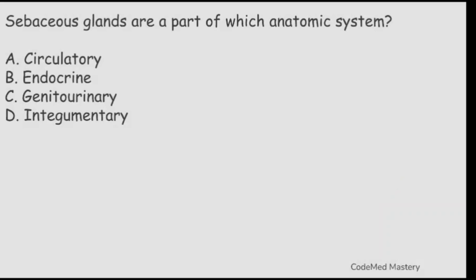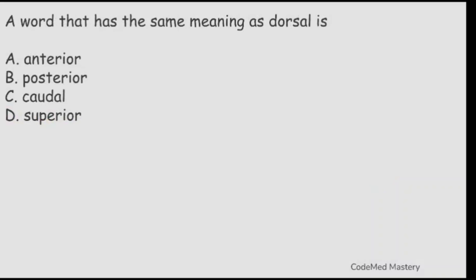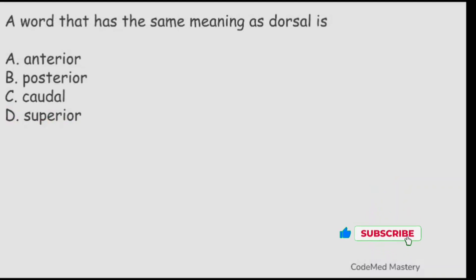Next question: sebaceous glands are a part of which anatomic system? Option A: circulatory. Option B: endocrine. Option C: genitourinary. Option D: integumentary. The right answer is option D, integumentary.